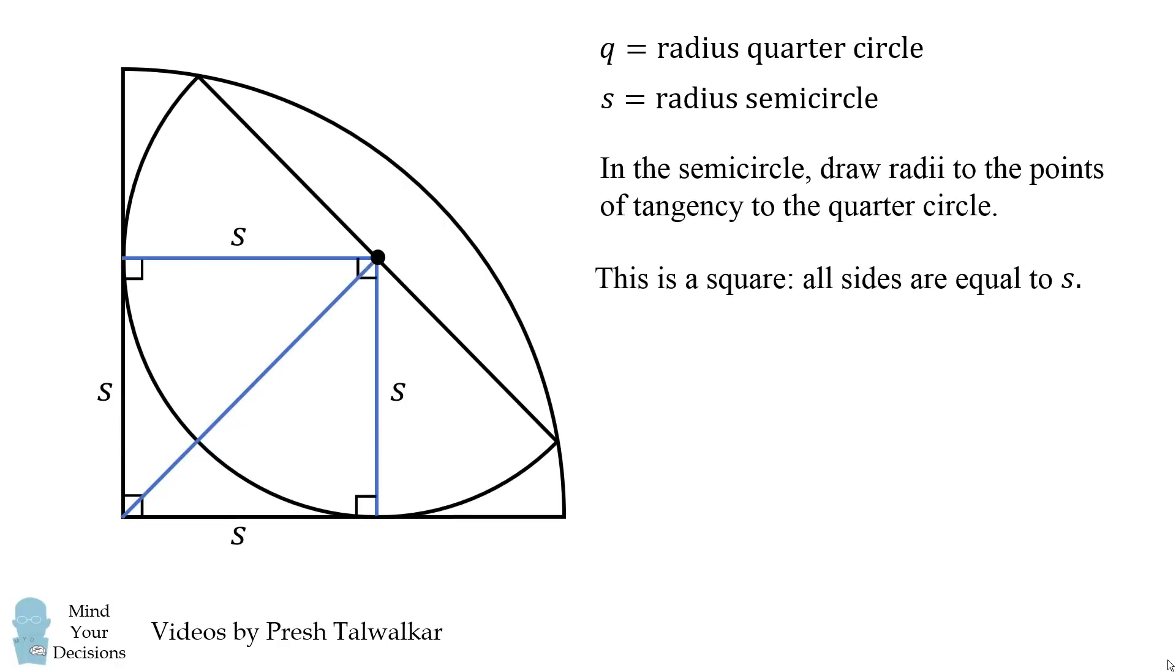Furthermore, the diagonal of the square will equal s times the square root of 2, because we have a 45-45-90 right triangle.